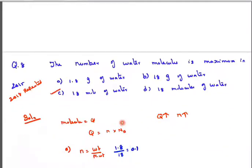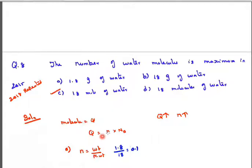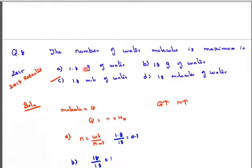Next question — asked in both 2015 and 2018, so be thorough with this. The number of water molecules is maximum in which option? Options: 1.8 grams of water, 18 grams of water, 18 moles of water, or 18 molecules of water. The quantity Q = number of moles × Avogadro's number, so more moles means more molecules. Let's find the number of moles for each option.